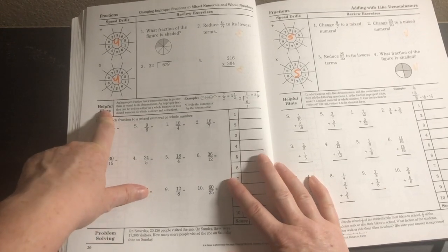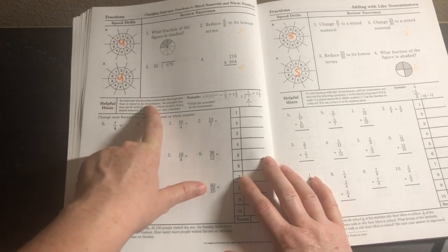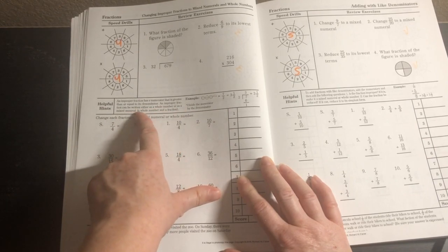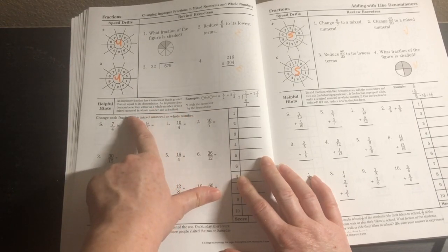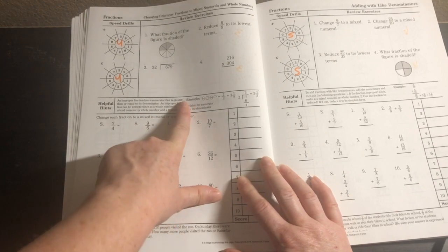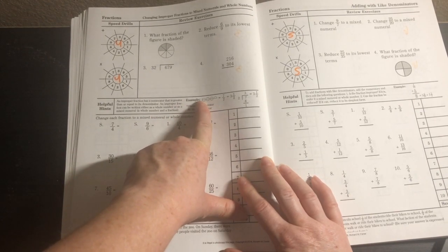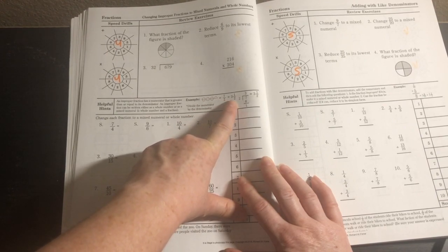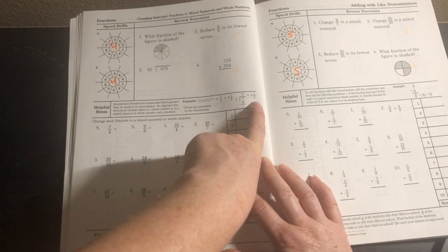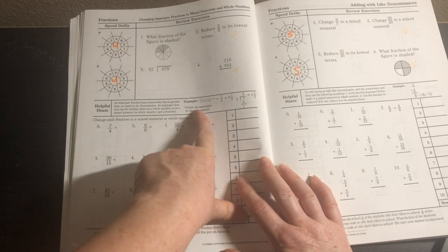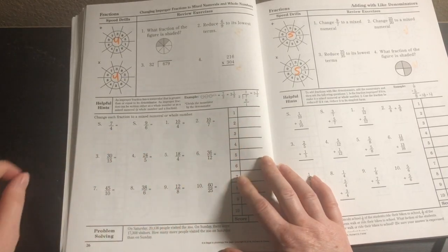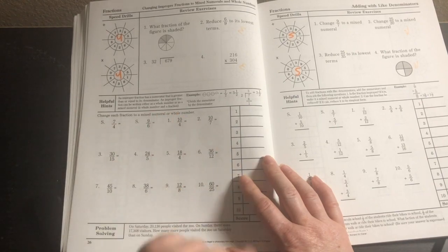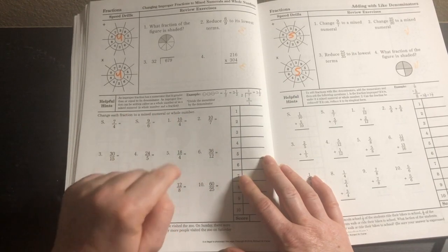I like how this keeps spiraling the review questions throughout the book. As they're learning new things they're getting an opportunity to practice with just a few questions, so it's not overwhelming. Then we have helpful hints: an improper fraction has a numerator that is greater than or equal to its denominator. It shows examples in pictures and explains to divide the numerator by the denominator.